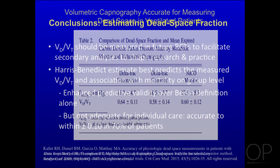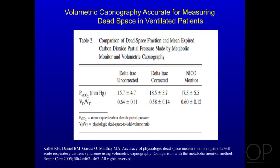To close, I'd like to make a plug for volume capnography. It's very straightforward to measure right at the end of the intratracheal tube — you get the mixed expired CO2, you get a blood gas, and you can measure the VDVT straightaway. This is data from Rich Kelley showing that using one of the commercial methods — the NICO monitor — to measure mixed expired CO2 works well.